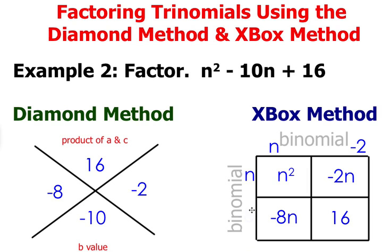We need to find out the next term of our binomial right here. n times what will give you negative 8n? That value is negative 8.